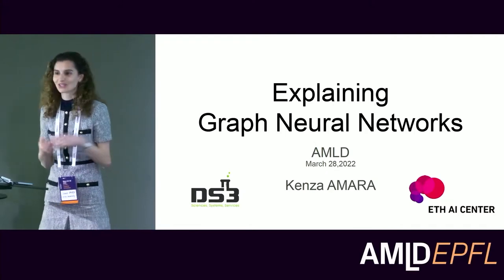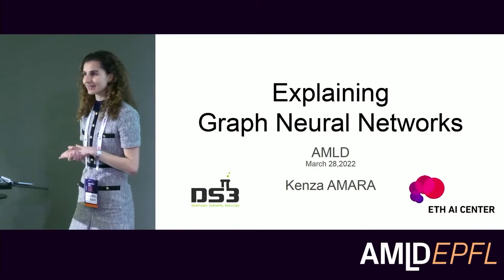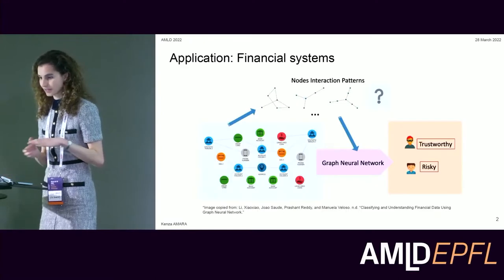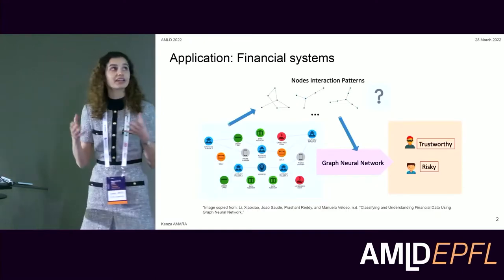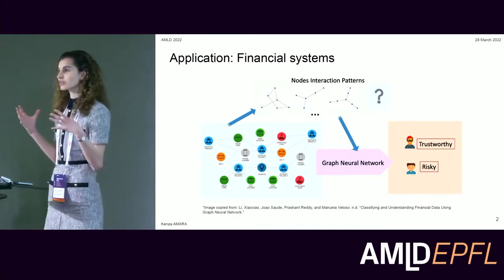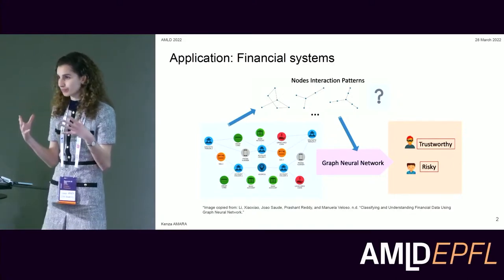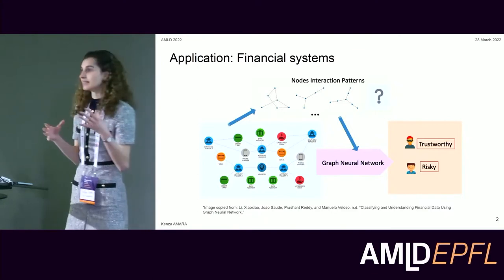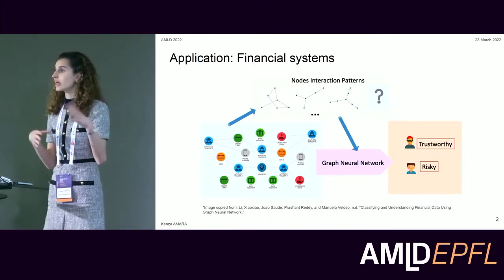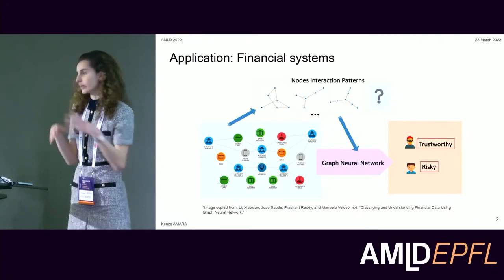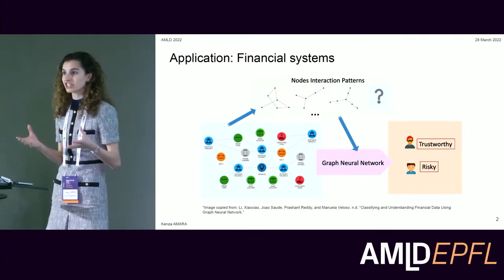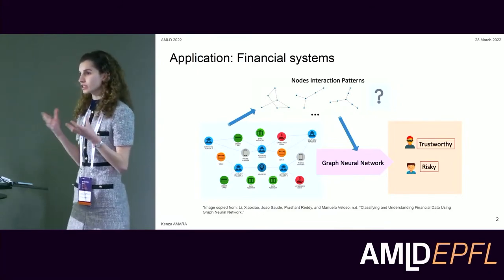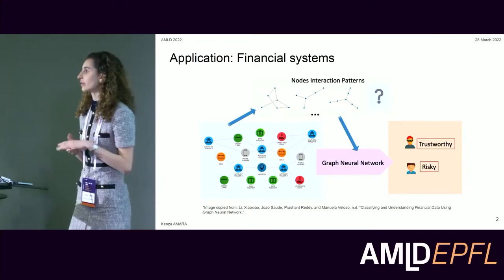Today I'm happy to introduce you to the topic of explainability for graph neural networks and to show you how important it is especially in finance. The data collected by financial institutions has a topological structure that makes it easy to represent as a graph, such as financial networks, payment networks, and recommendation systems. Given this graph structure and node features, graph neural networks or GNNs are a powerful tool to do predictions on nodes or the whole graph — for instance, for fraud detection or account matching.